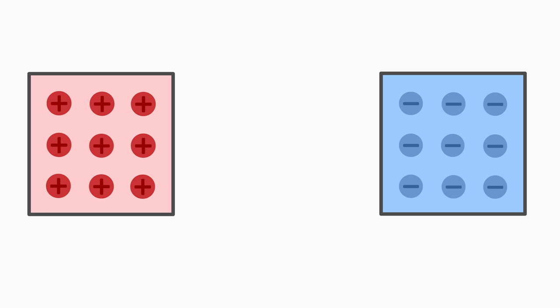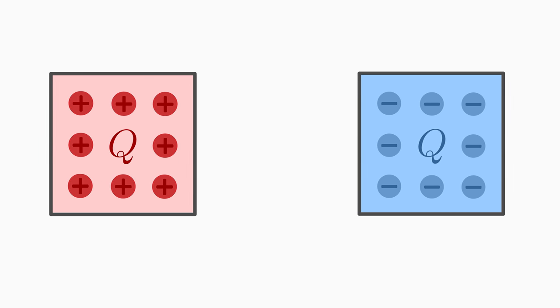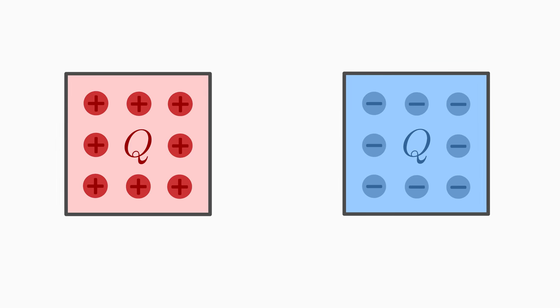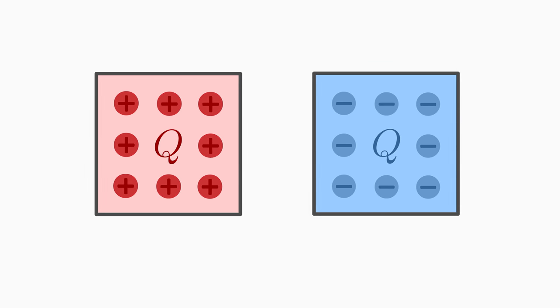We add up the individual charges small q together and get a total charge that we denote with a large letter Q. Our oppositely charged boxes will attract each other and move towards each other. Our boxes are just like two big charges. We say they exert an electric force on each other.